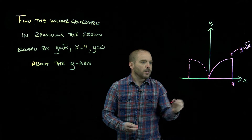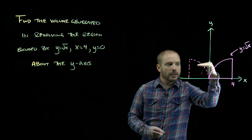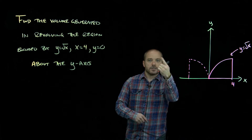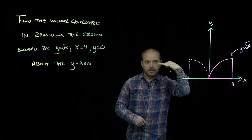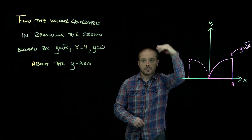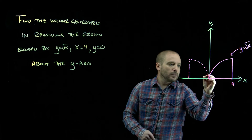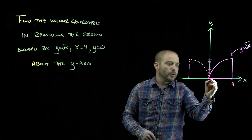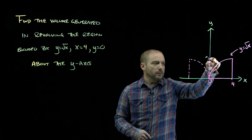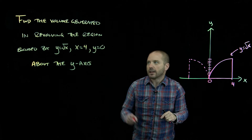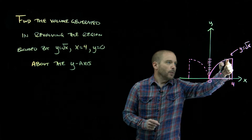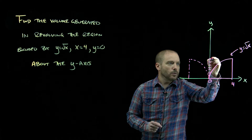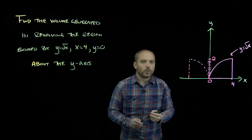Now think about our partition. We're going to slice this horizontally now, because as we revolve around the y-axis, all of our circles are stacked up along the y-axis. So this gets sliced — y from zero all the way up to the top. We weren't given that value in our description, but we know it's where these two curves intersect: when x is 4, y is square root of 4, or 2.